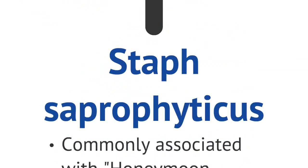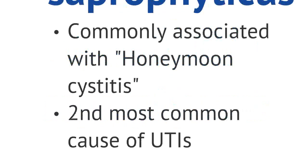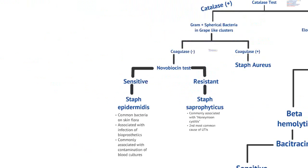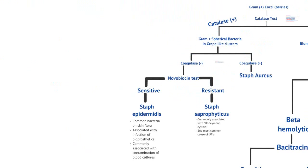The organism that is gram-positive cocci, catalase-positive, coagulase-negative, and novobiocin-resistant is called Staph saprophyticus. It is commonly associated with what's called honeymoon's cystitis. It is the second most common cause of urinary tract infections, especially in the young. This is a brief overview of gram-positive cocci that are catalase-positive and how to differentiate between them — know the different tests and the description of each organism.